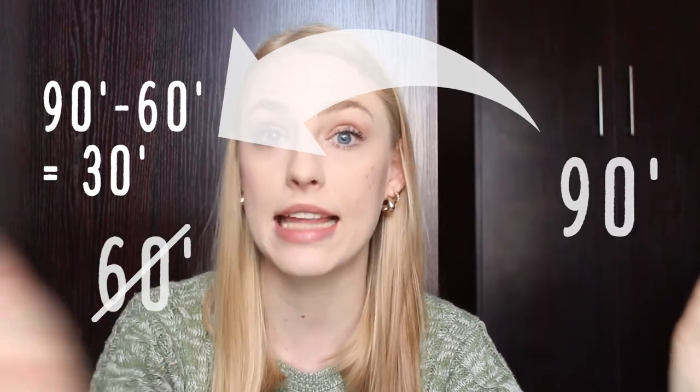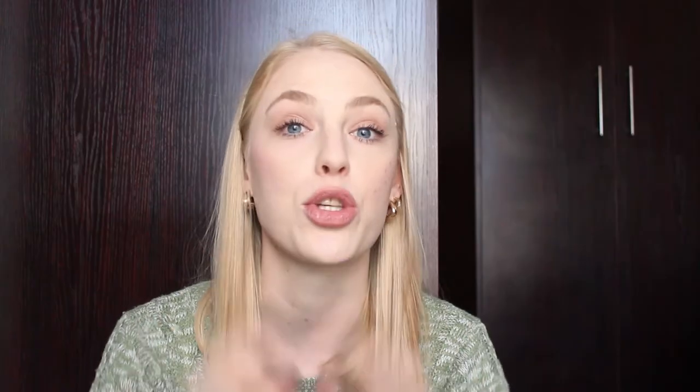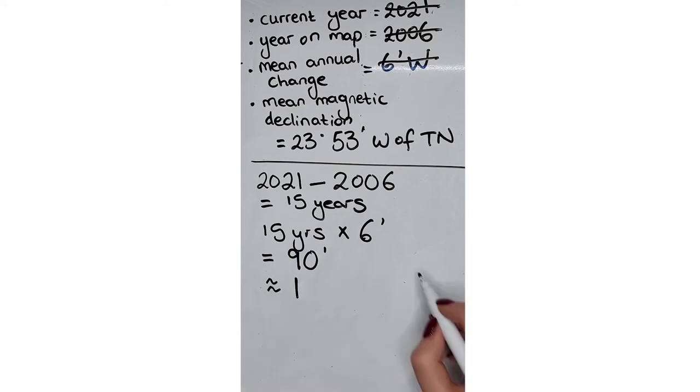It goes in once, and we have now used up that 60 minutes. What do we have left over? 90 minus the 60 we've used up gives us 30 minutes. That 60 becomes one degree. So our conversion looks like this: one degree and 30 minutes.